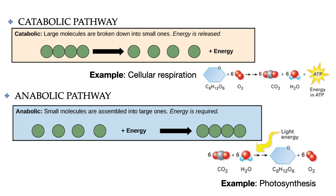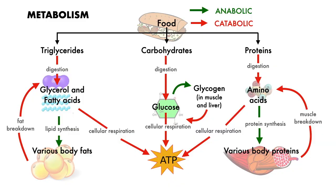On the other hand, anabolic pathways assemble complex or large molecules from smaller molecules and consume energy in order to do this. An example of an anabolic pathway would be photosynthesis. Photosynthesis requires energy in the form of light and uses that energy in a series of reactions to make glucose from carbon dioxide and water. Other examples of catabolic reactions include the breakdown of fats, sugars, and proteins during digestion into their monomers, while anabolic reactions happen whenever our cells use those monomers to build our body parts.